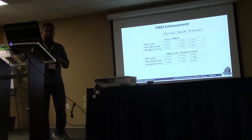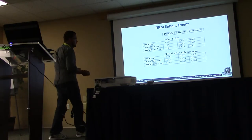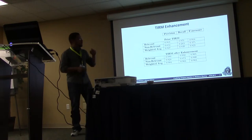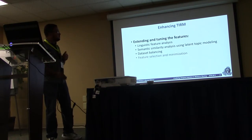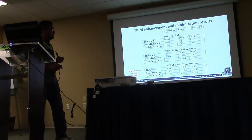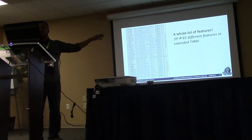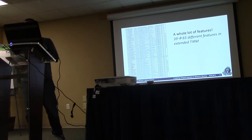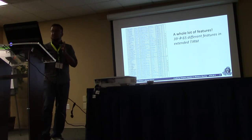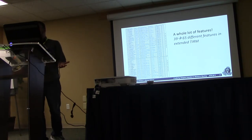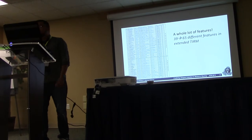After all the enhancements — new features, balancing, and changing the similarity measure — we actually increased performance in both recall and precision for both classes significantly, which was exciting. But there was a problem: we went from 39 features to 65 features, which is a lot. For one tweet connected to a resource, it can take up to seven or eight minutes to calculate all the features and give a decision on intention. No one is going to wait for that.